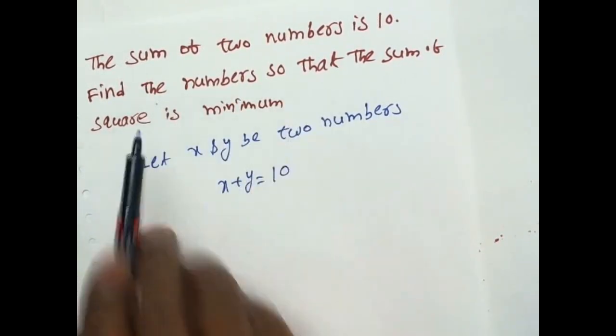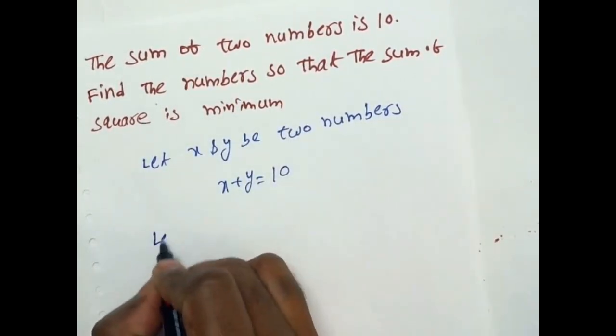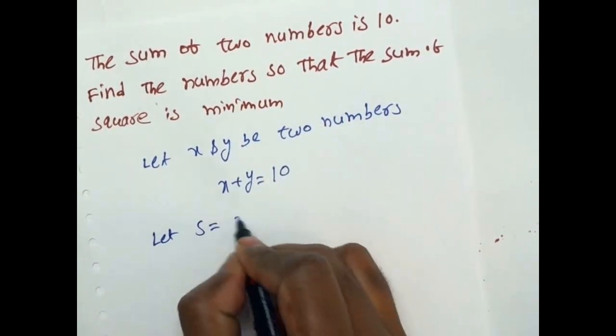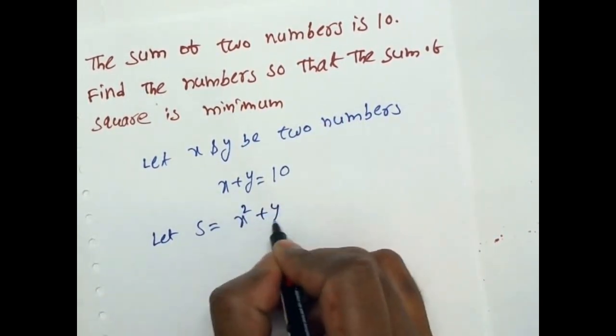And the sum of their squares is minimum. Let S is equal to sum of their square means X square plus Y square.